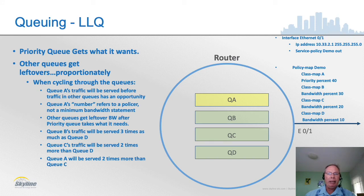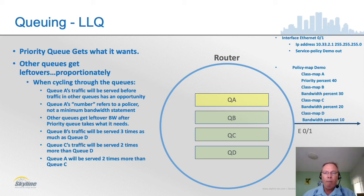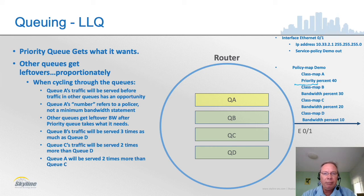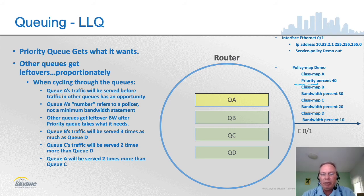The last queuing mechanism is LLQ — low latency queuing. In the example shown, the only change from the CBWFQ example on the previous page is changing the word 'bandwidth' to 'priority' for one class. The moment you say 'priority' in a router and apply it to an interface, you now have LLQ, not CBWFQ. LLQ is the idea of adding a priority queue alongside a class-based weighted fair queuing configuration.